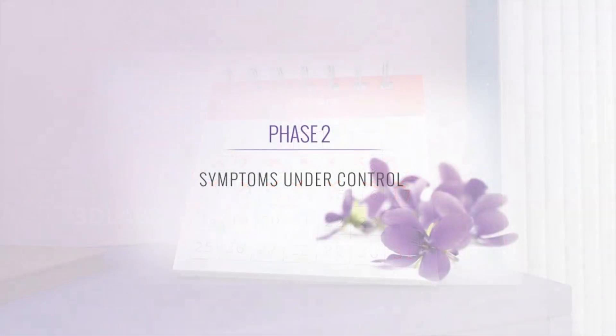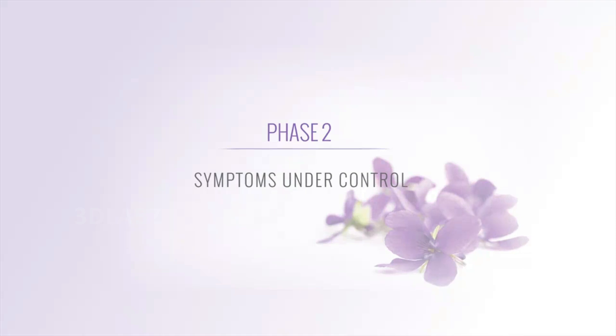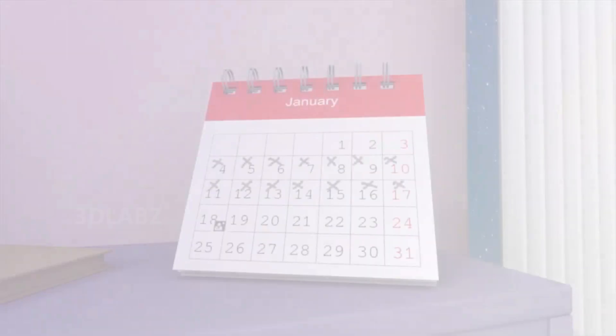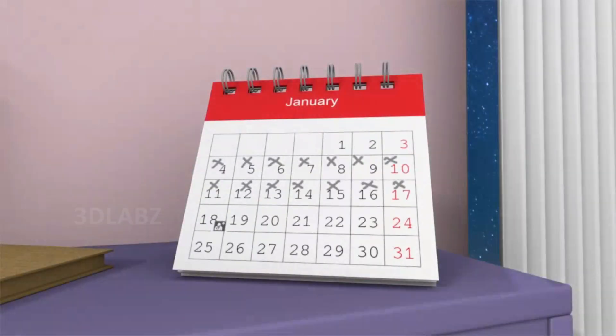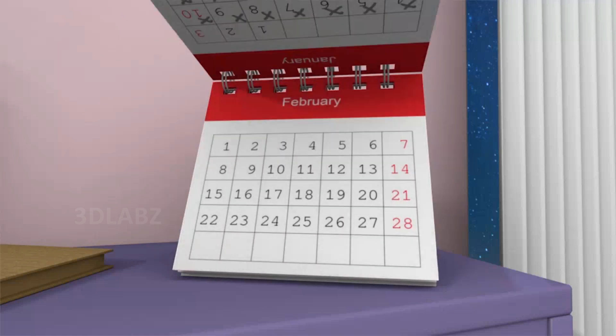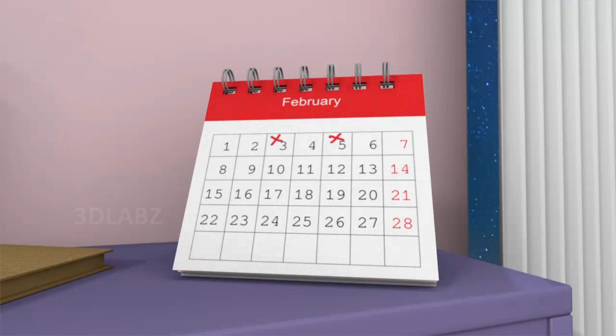Phase 2, taper down phase. Once your symptoms are under control, you will move to phase 2, the taper down phase. You will gradually reduce to the lowest frequency that will give you relief of your symptoms. For example, you will taper down from one application per day to one application twice a week. You will need to book a follow-up appointment with your doctor after four weeks.